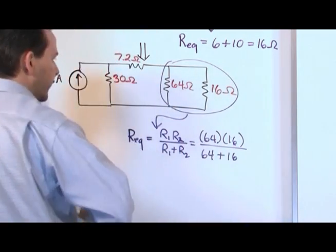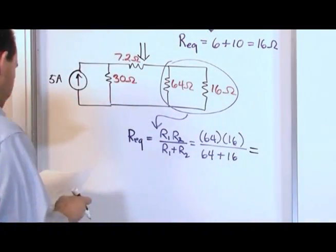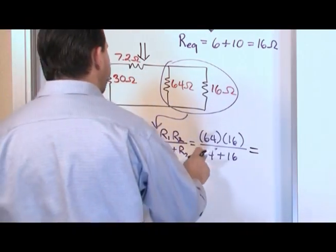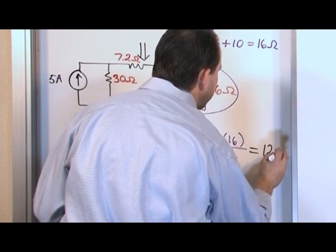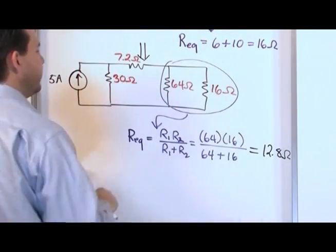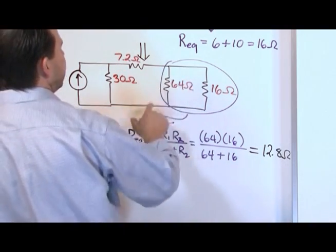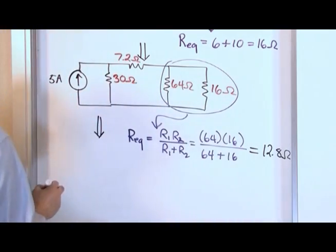All right. And so, when we do this, let's switch colors here a little bit. My purple marker is not doing so well. So, when we do 64 times 16, then we do the 64 plus 16 on the bottom. We're going to get 12.8. And I trust that you can do this simple calculation. You do the top and the bottom, and then you divide. You get 12.8 ohms. And that's what this is equal to. So, again, we redraw the circuit.